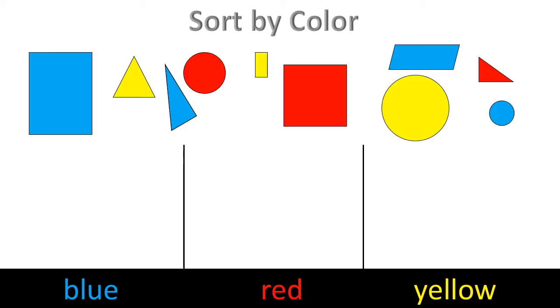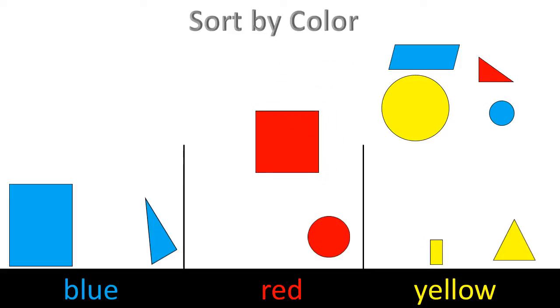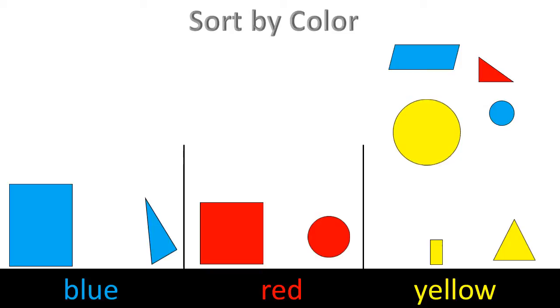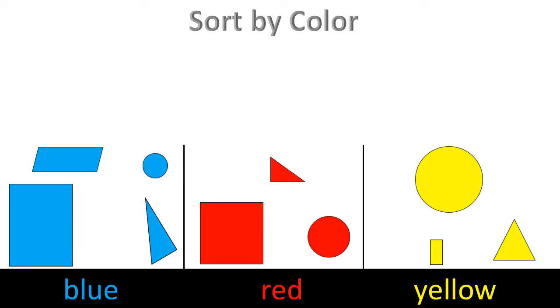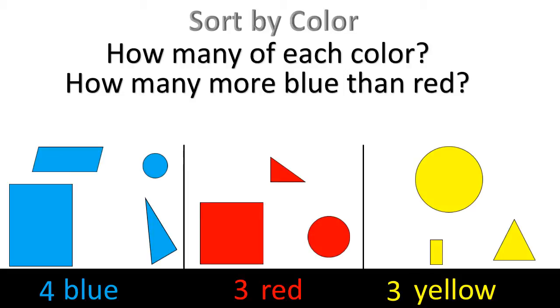Sort. Sort by color. How many of each color? Four blue. Three red. Three yellow. How many more blue than red? One.